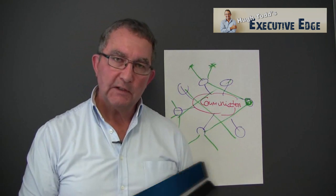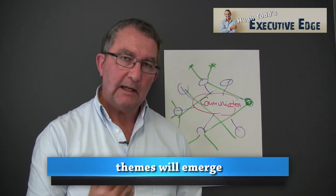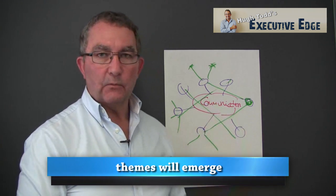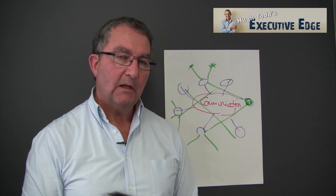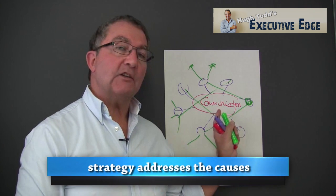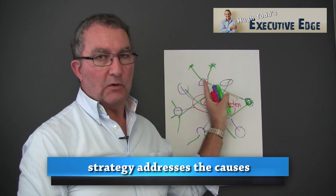What always emerges is that there are themes. There are underlying causes that end up with us not being able to communicate as effectively as we can. And what that tells us is that the strategies we generate at the end of the day need to solve these underlying causes.